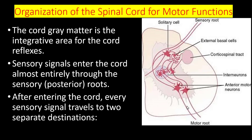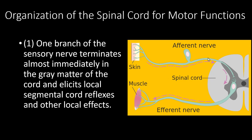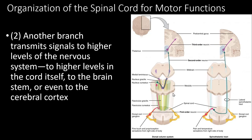The other branch transmits signals to higher levels of the nervous system — higher levels in the cord itself, or to branches to the brainstem, or even to the cerebral cortex. The second branch either produces local effects or travels in the cord to a higher level, then decussates to the other side to reach the thalamus and from the thalamus to the cerebral cortex. This decussation occurs either in the same segment of the spinal cord or the sensory nerve traverses upward through many segments before crossing.